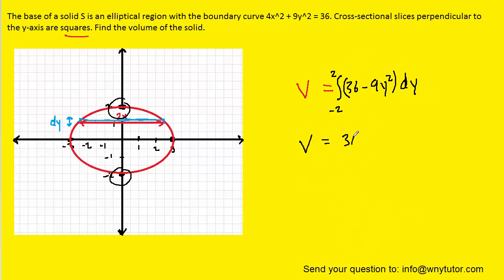So when we integrate 36 with respect to y, we get 36y, and then here we have to add 1 to the power. It's going to become y to the third, and then we divide by that new power. And again, we're integrating from negative 2 to positive 2. We can simplify this. This will just become 3y^3.